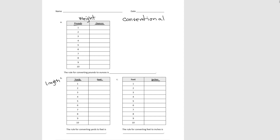Starting with weight, the one thing we need to know is that there are 16 ounces in a pound. Ounces are the smaller unit of weight, and 16 ounces equals one pound. We can fill in the rest of our table knowing that if one pound is 16 ounces, then 2 times 16 equals 32 ounces in 2 pounds. To complete this table, we multiply the number of pounds by 16.